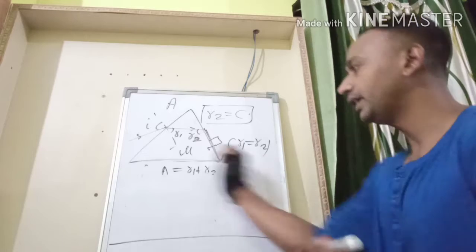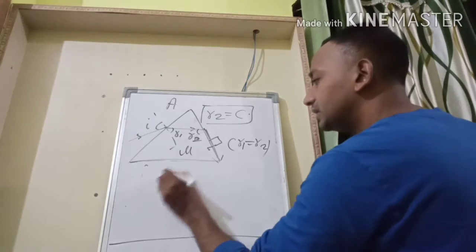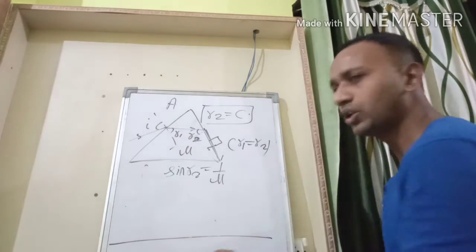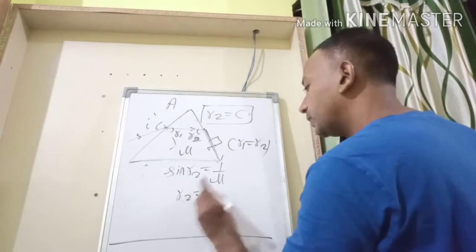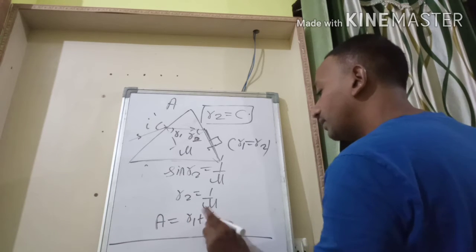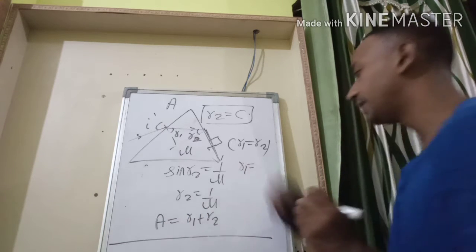If this ray is suffering TIR on the second surface, we'll take r2 as c because it is the critical angle. We know if it is critical angle, then we can write sine r2 equals 1/μ. If it is a small angle, we'll take r2 equal to 1/μ. As per the equation, A equals r1 plus r2.